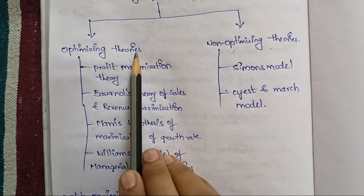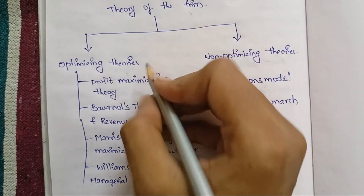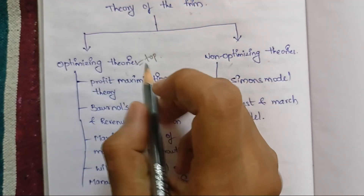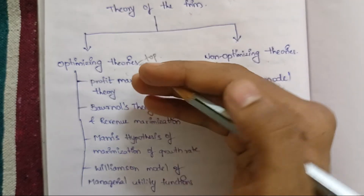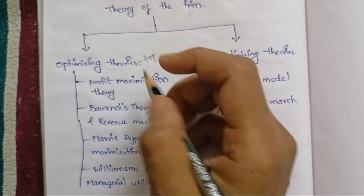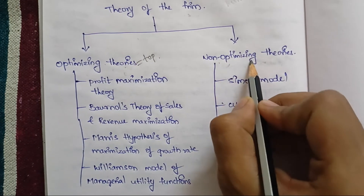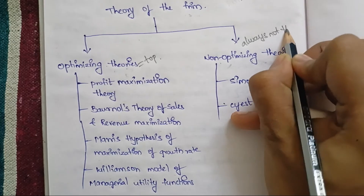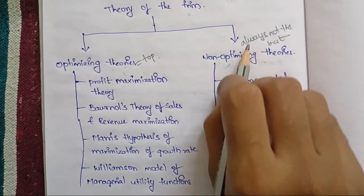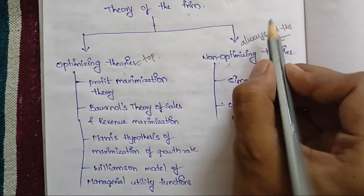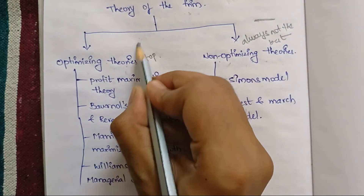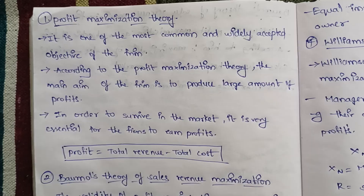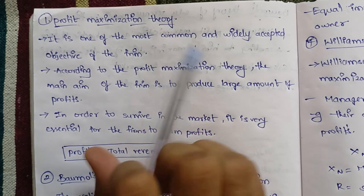Now we will see what optimization theory is. In optimization theory, the company will always try to be at the top position. The firm always tries to achieve maximization — this is the core idea of optimization theory.